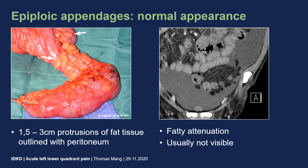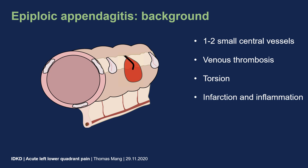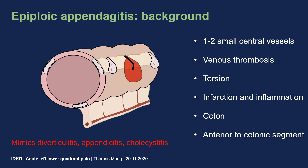Here is another example showing multiple epiploic appendages from the sigmoid colon surrounded by intraperitoneal fluid. Within the epiploic appendages there are one or two small central vessels. There may be either venous thrombosis of these central vessels or torsion of the entire epiploic appendage, finally leading to infarction and inflammation. Epiploic appendages may occur in any colonic segment, most commonly within the sigmoid colon, and are typically located anterior or anterolateral to the adjacent colonic segment. Clinically it mimics diverticulitis, appendicitis, or cholecystitis.